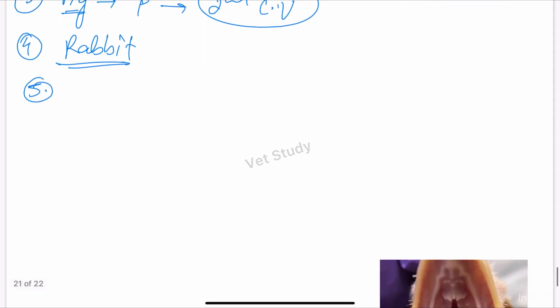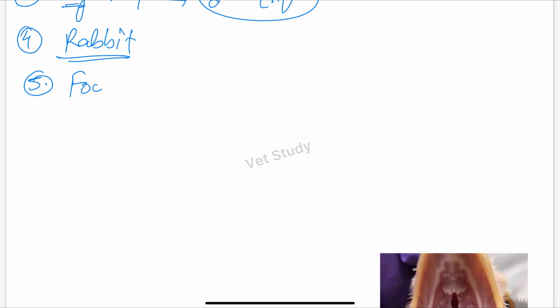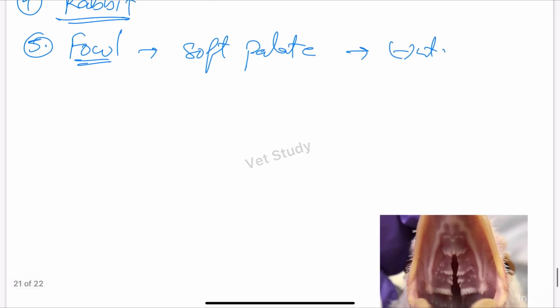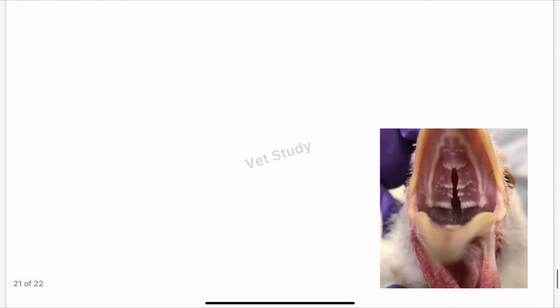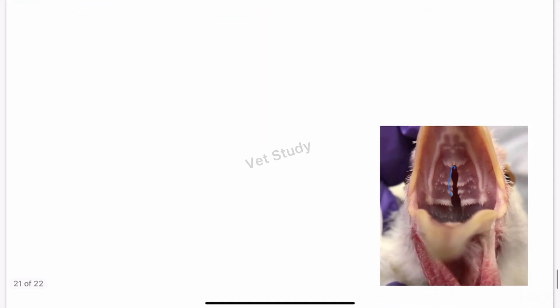Fowl is interesting because in fowl, the soft palate is absent. This is important. The roof presents a median infundibular slit - this median infundibular slit is only present in poultry.